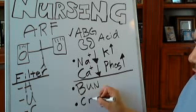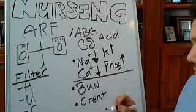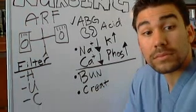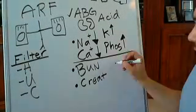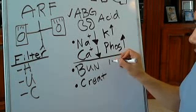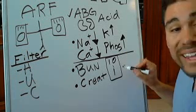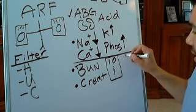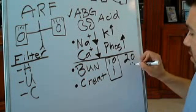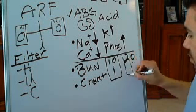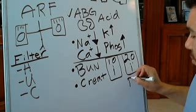Your BUN and your creatinine are going to be off. Now if it is a 10 to 1 ratio, this is your intrarenal. If it is a 20 to 1 ratio, this is your prerenal.